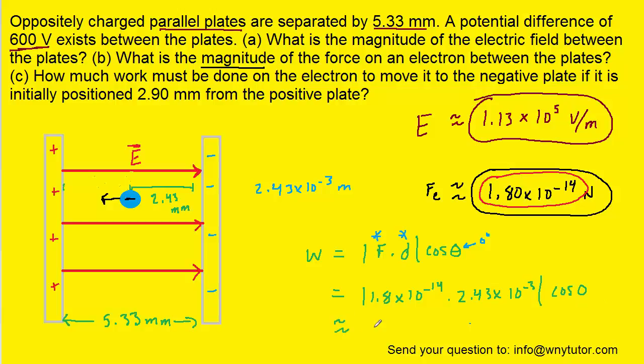And after you plug in and calculate, you should get approximately 4.37 × 10^-17, and the unit of work will be joules. And that is the correct answer to part C.